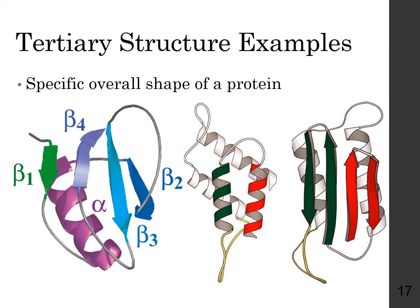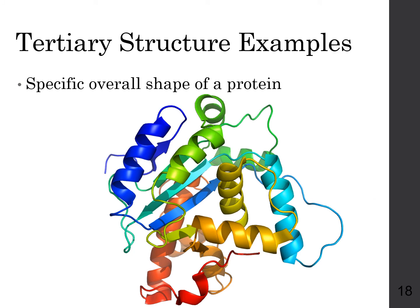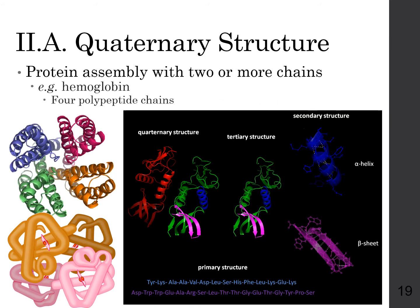The tertiary structure is the overall three-dimensional shape the protein takes. However, proteins can continue to interact with additional proteins to form a quaternary structure — meaning multiple proteins interacting with one another. A typical example is hemoglobin in the blood, composed of four separate proteins assembled into a much larger structure. The lower right-hand side of the slide shows the step-by-step assembly: from primary structure (the order of amino acids), to secondary structure (alpha helices and beta sheets from hydrogen bonding), to tertiary structure, and finally to quaternary structure.